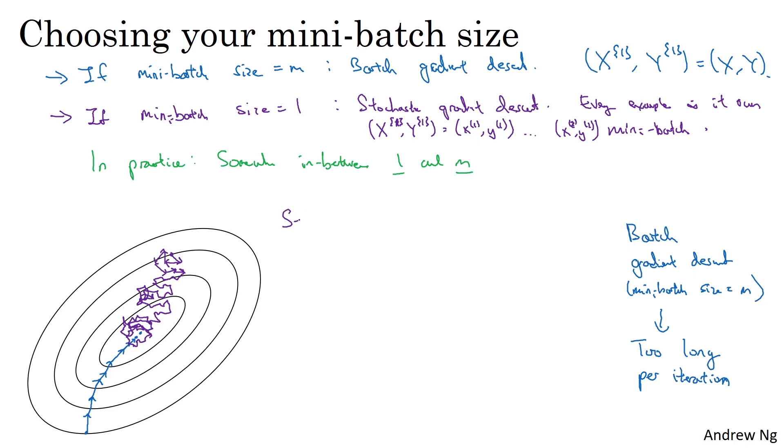If you use stochastic gradient descent, it's nice that you get to make progress after processing just one example. But the huge disadvantage of stochastic gradient descent is that you lose almost all your speed up from vectorization, because here you're processing a single training example at a time. The way you process each example is going to be very inefficient.